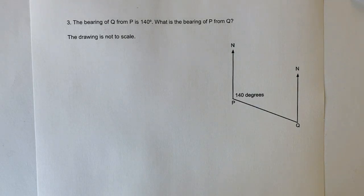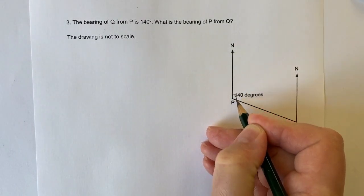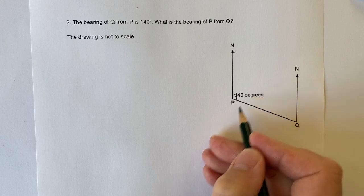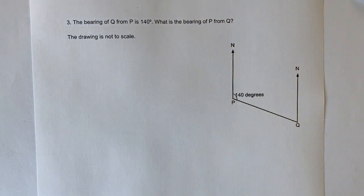So it says the bearing of Q from P is 140 degrees. So what that means is that from the north, clockwise, we've gone 140 degrees. And if you could imagine, we're sitting on P, and then we're looking across towards Q.